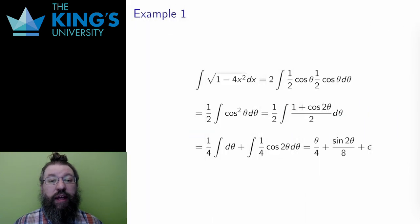These are all the pieces. Now I want to switch everything in the substitution. The square root becomes 1 half cos theta, the dx becomes 1 half cos theta d theta, and then I simplify. What I get is the integral of cos squared theta.